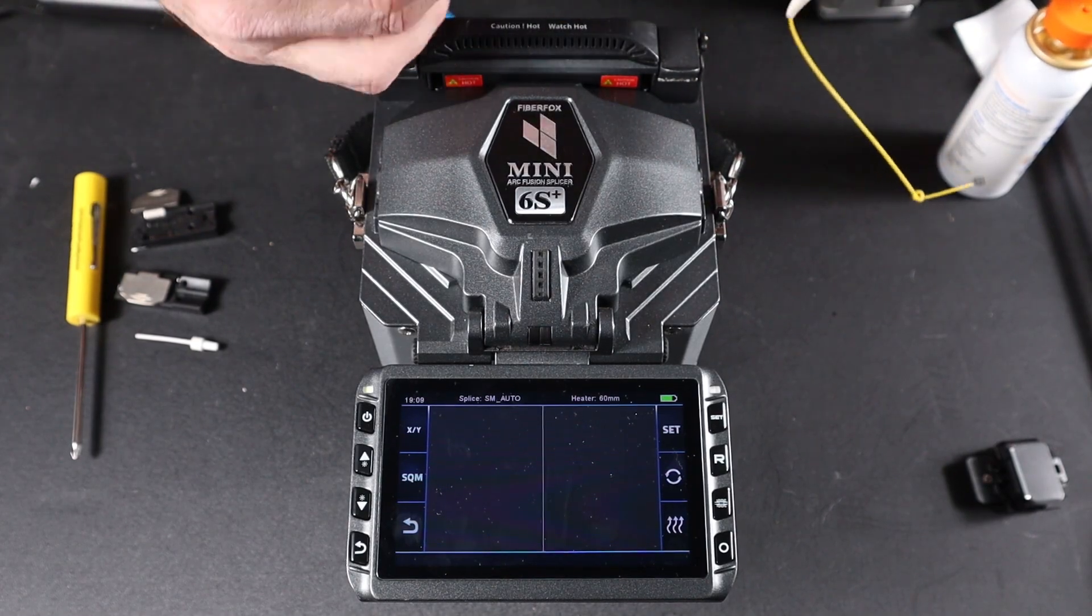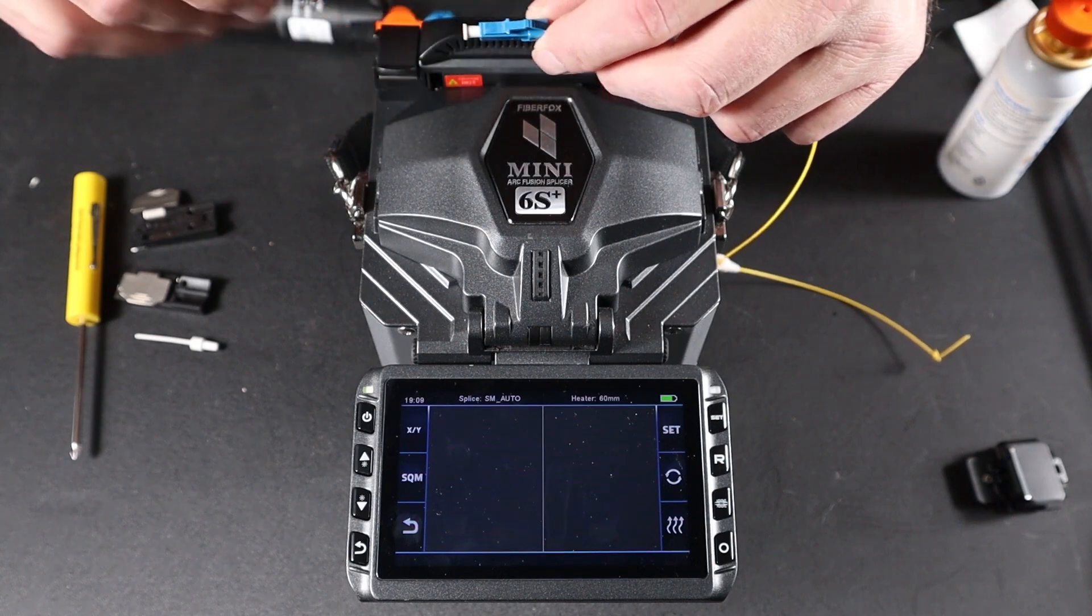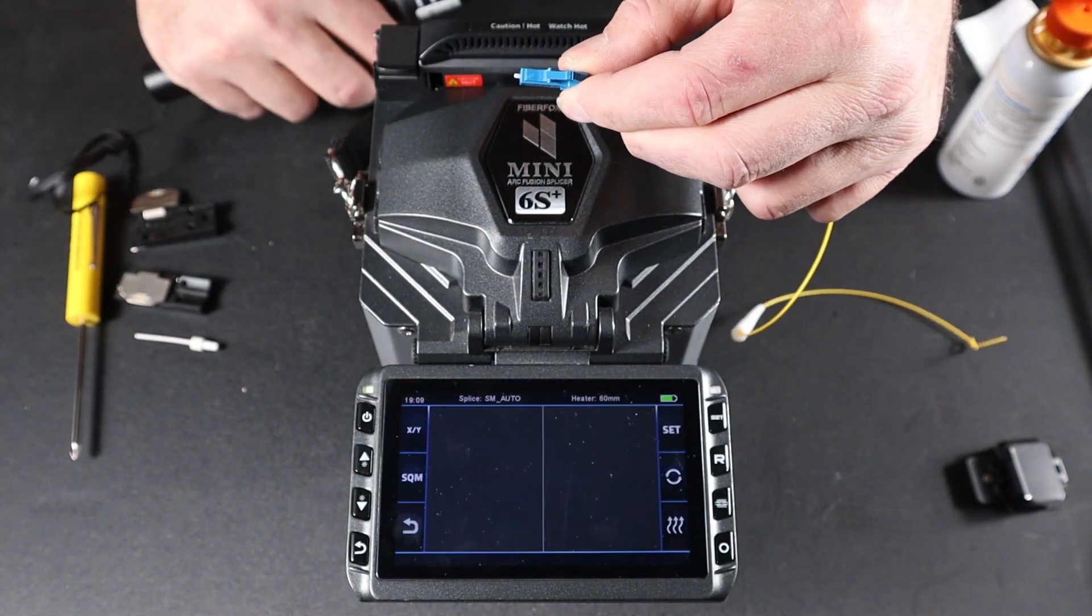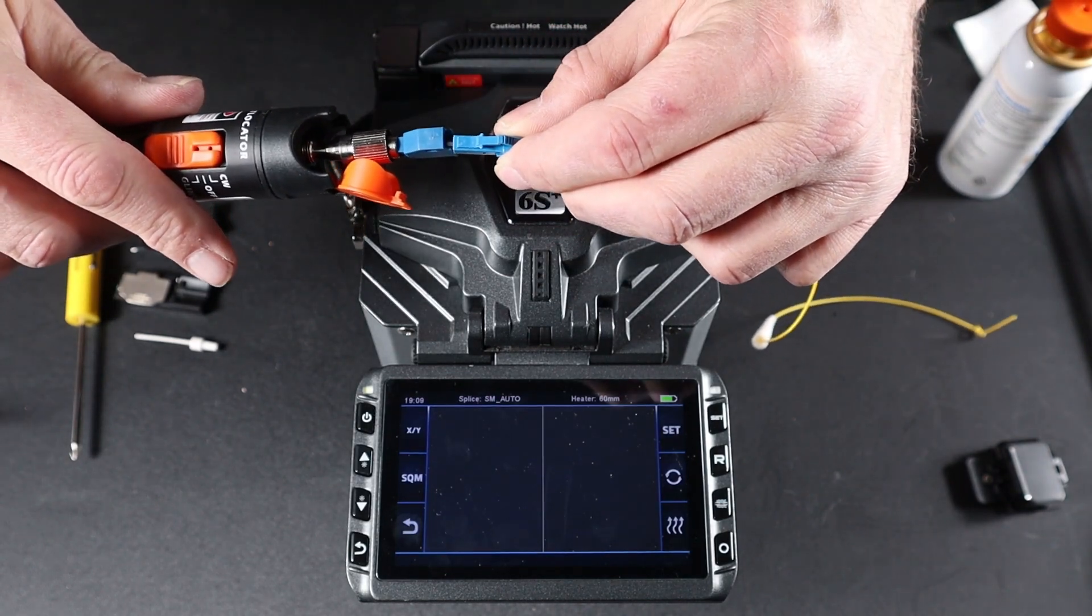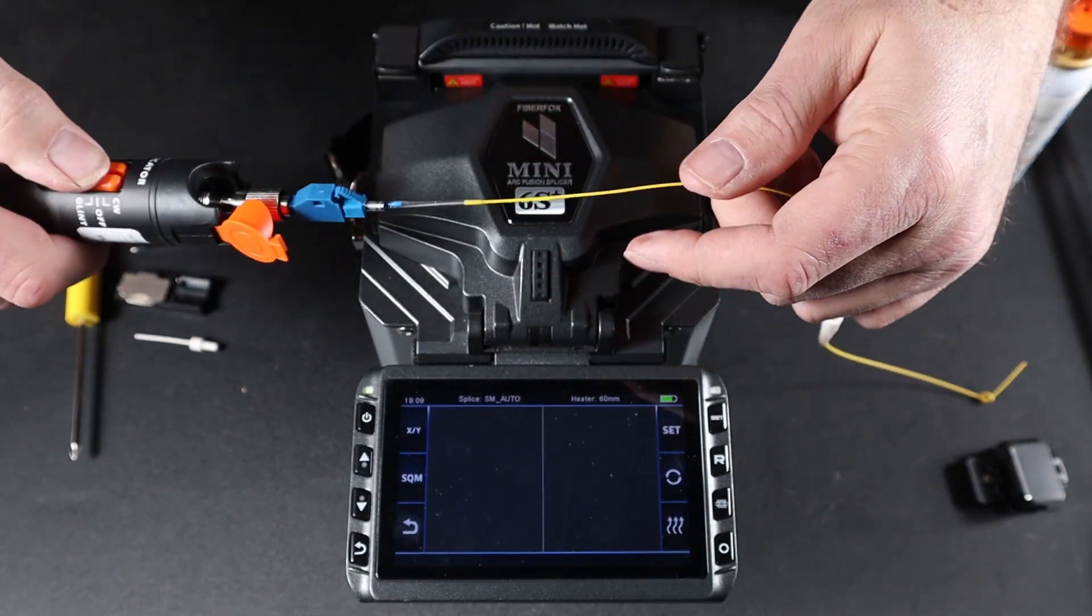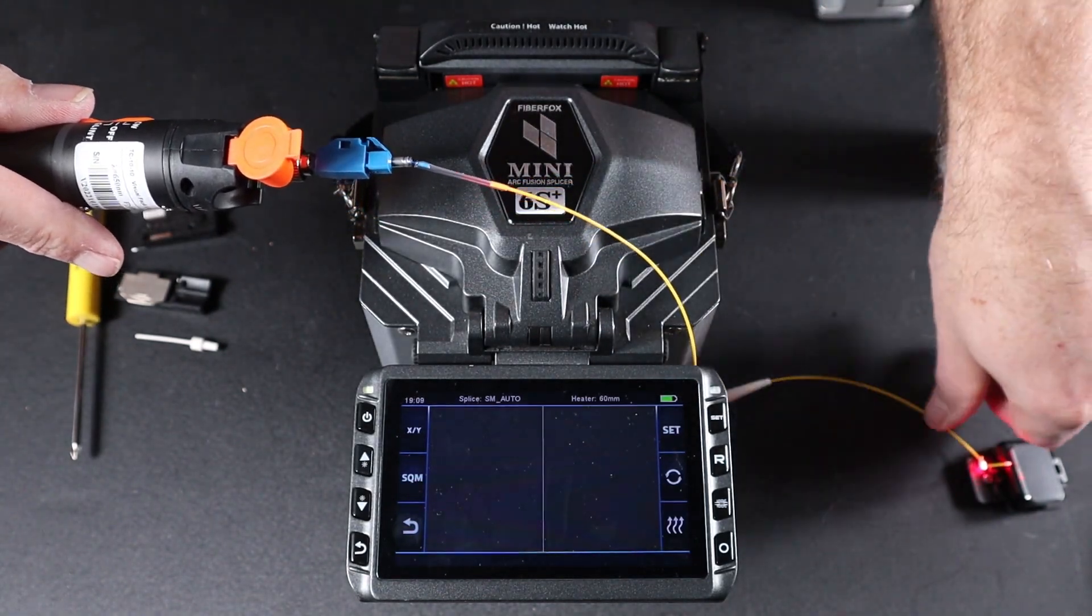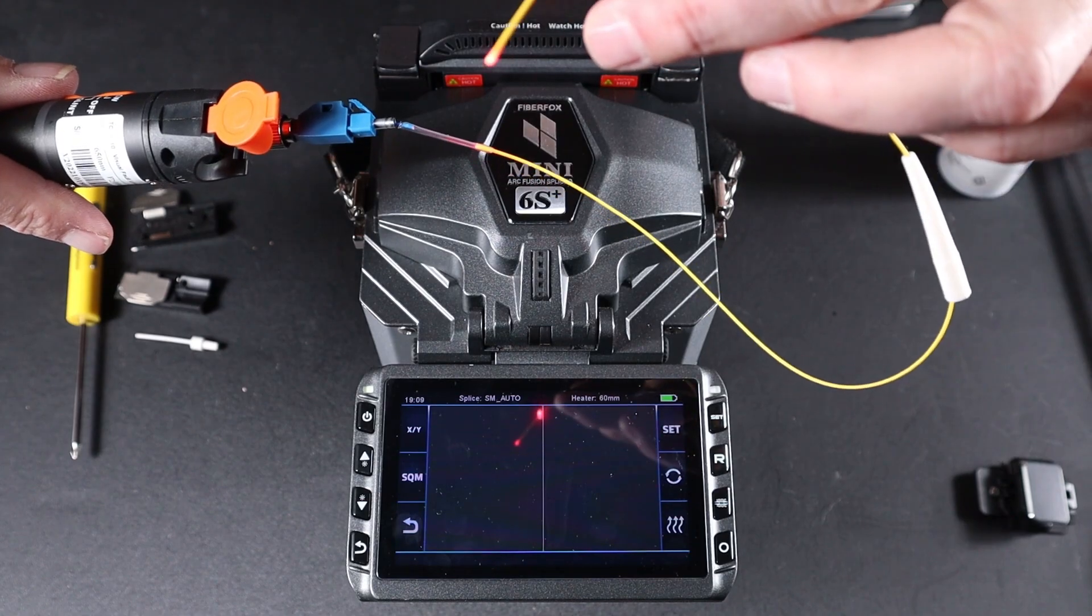Once it's cooled, if you have a visual fault locator, you can remove your dust cap. Plug your connector in. And check the connector to see that everything is good.